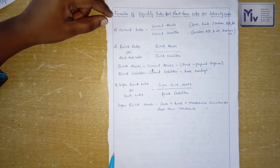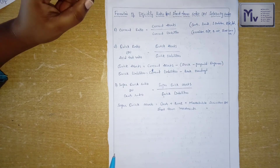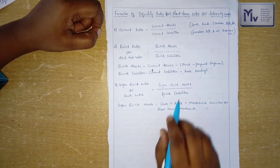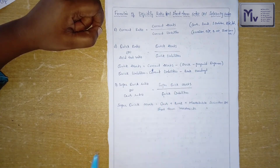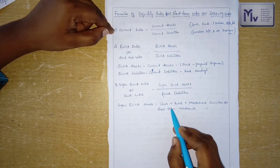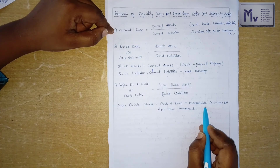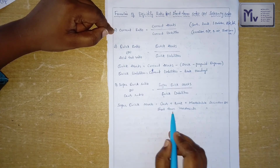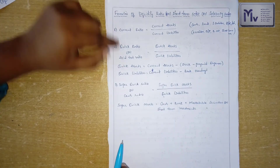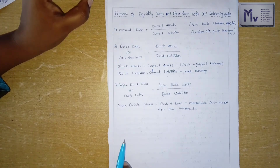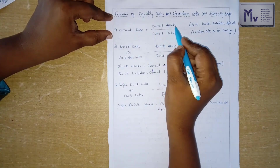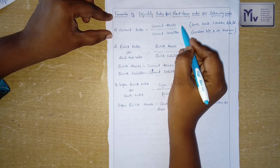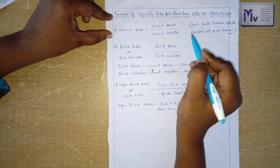The third one is super quick ratio, also called cash ratio. Formula: super quick assets divided by quick liabilities. To calculate super quick assets, we consider only cash, bank, marketable securities, and short-term investments. These are the formulas for calculating liquidity ratio. The values for these items come from the profit and loss account and balance sheet, that is, the financial statements.